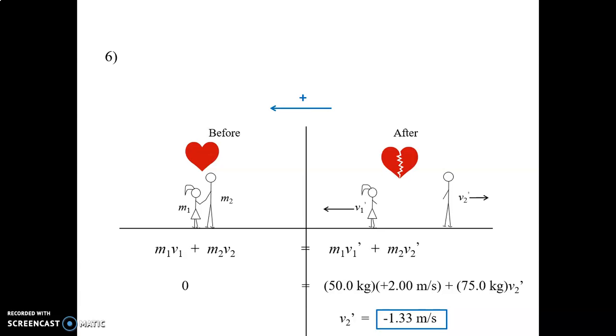And you should have no trouble getting v2' is negative 1.33 meters per second. Why is it negative? Well, this should make sense, right? If we call left positive and he's going to the right, we should expect a negative sign. So everything seems to be working out just fine.